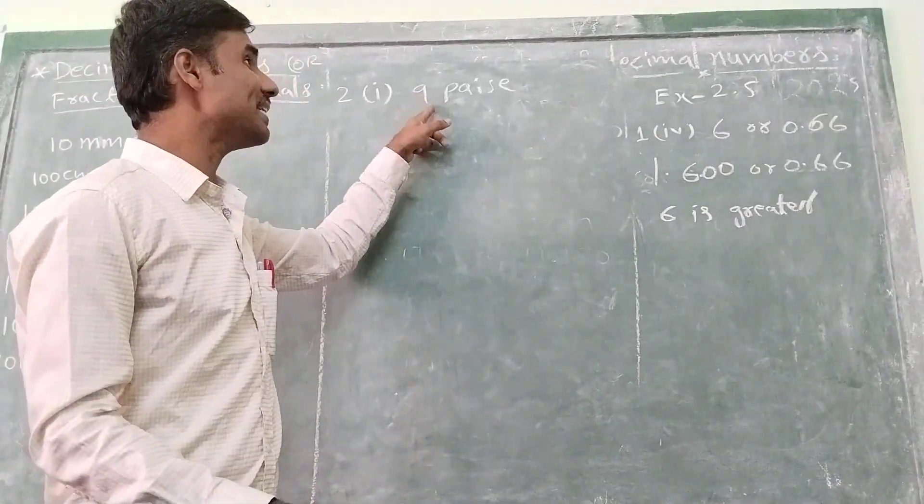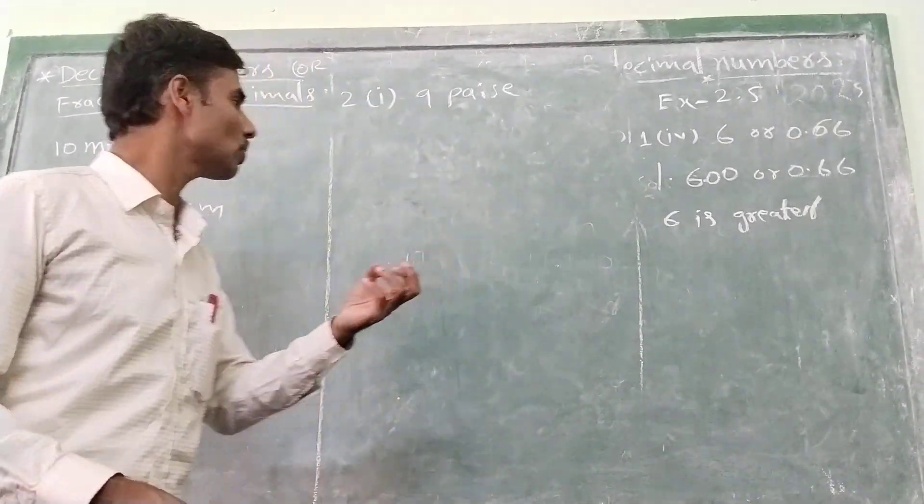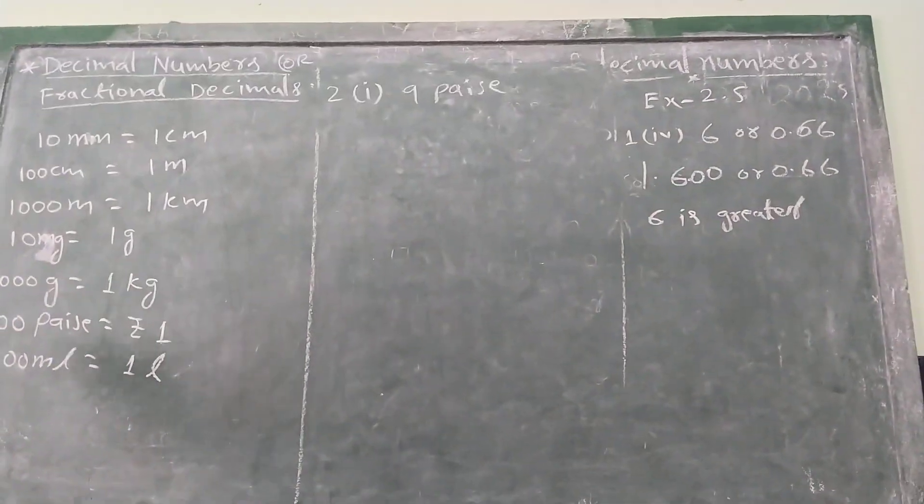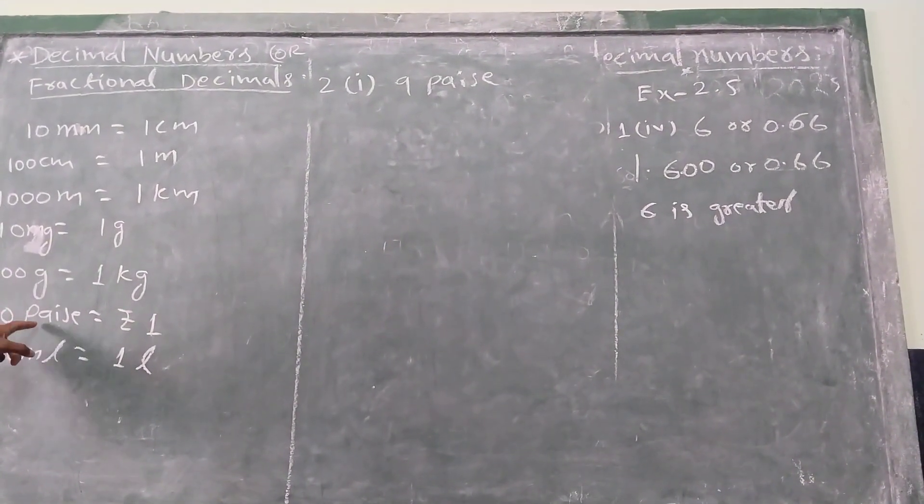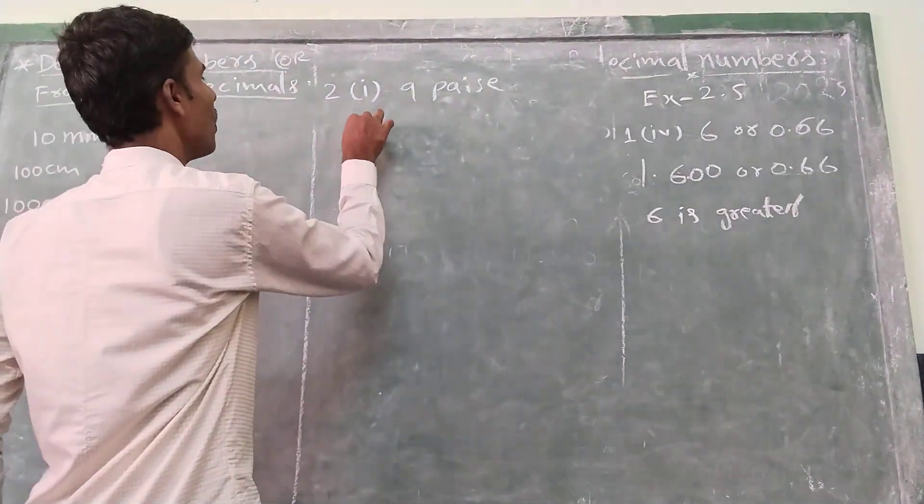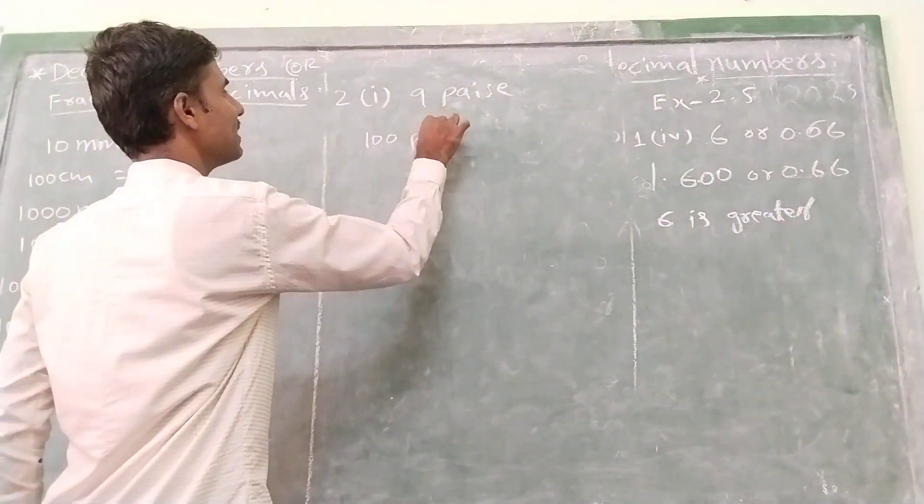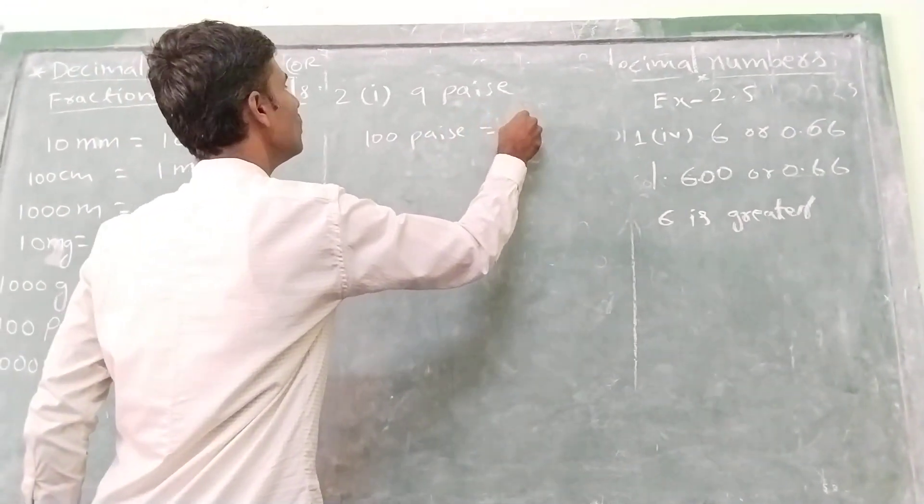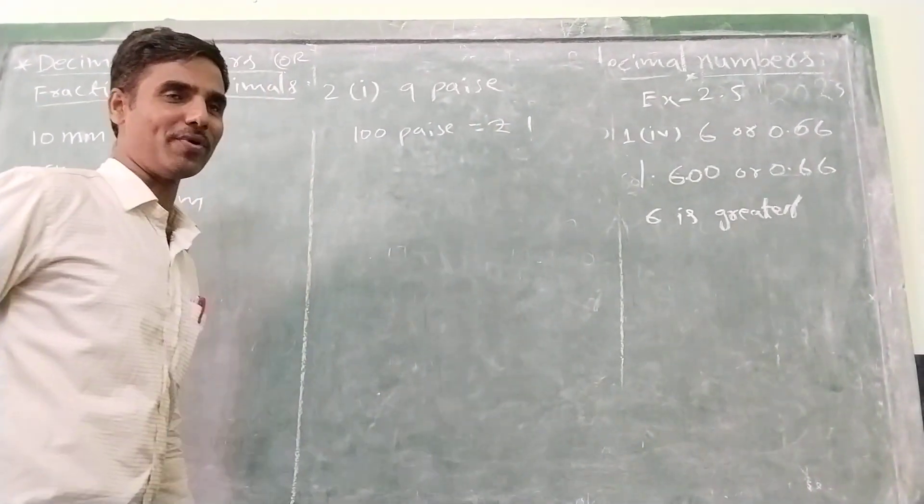Rupees means paisa is the small unit, rupees is the bigger one. So what we know here is 100 paisa equals 1 rupee.